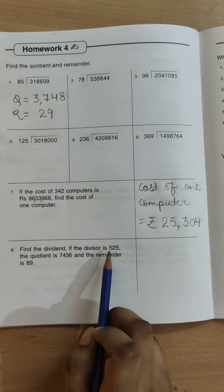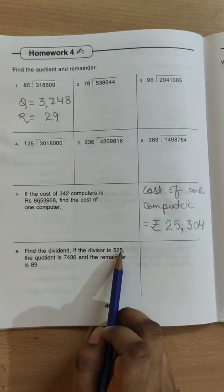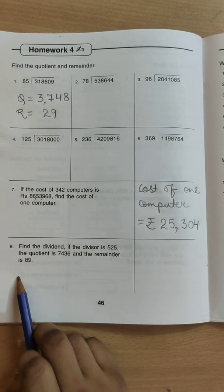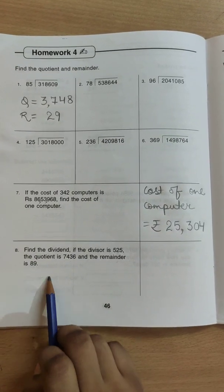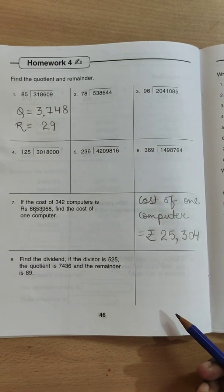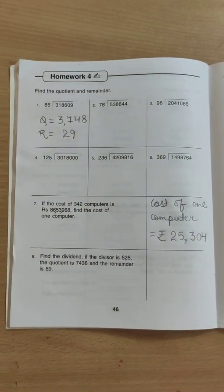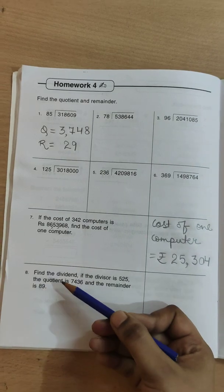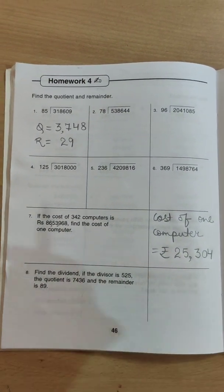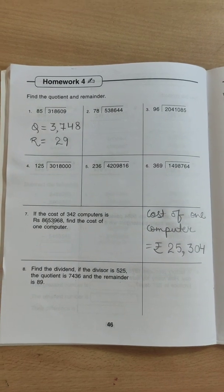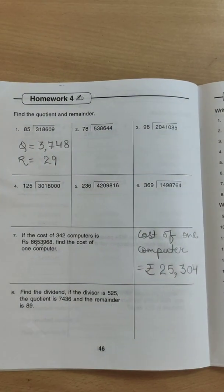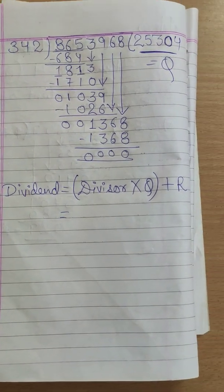Now 8th question. Find the dividend. Divisor is 525. Quotient is 7436, and the remainder is 89. So you need to find dividend. So you might have done one formula. Finding dividend equals to divisor multiply with quotient plus remainder. Yes. This is the formula for checking the division. So let's solve it and write our answer here.